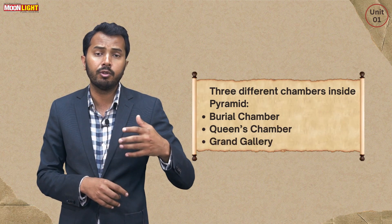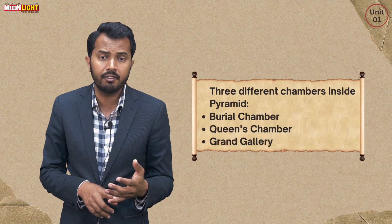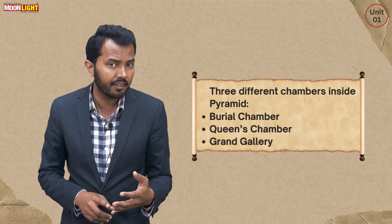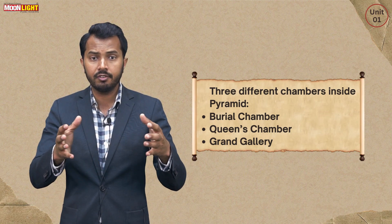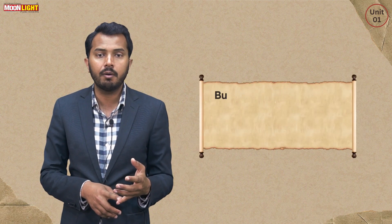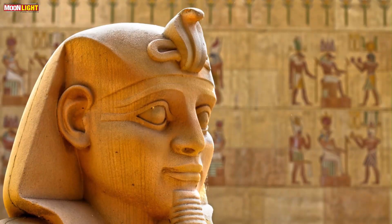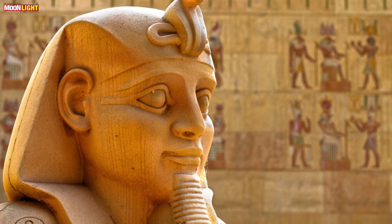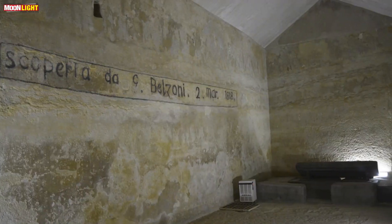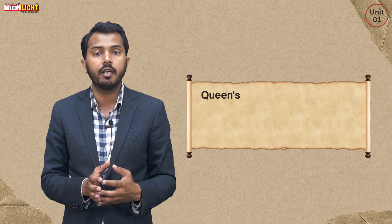The burial chamber was related to burial. The second chamber was called the Queen's Chamber, and the third chamber was known as the Grand Gallery. These three different chambers served three different purposes. The burial chamber was used for the king and the top-ranked nobility of the time — the king's and top-level nobility's death coffins were stored there.